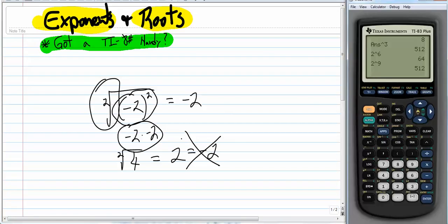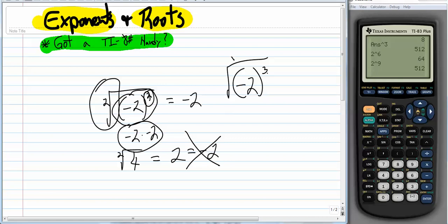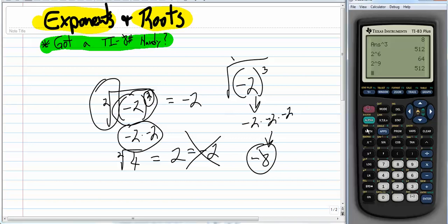But then you might wonder, well, what if I took, what if it wasn't squared? What if it was cubed? What if it was negative 2 to the third power? And what would that be? That would be negative 2 times negative 2 times negative 2. That would be negative 8, wouldn't it? But what happens if we try and take the square root of a negative number? Let's see here. Second square root of negative 8. Let's see what we get. You just can't do it.